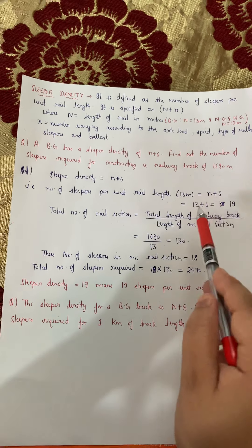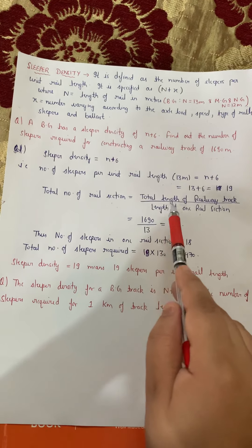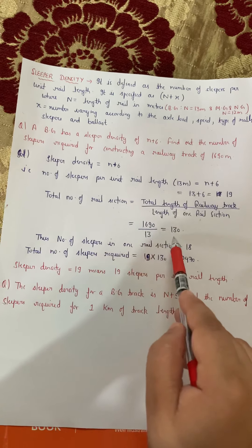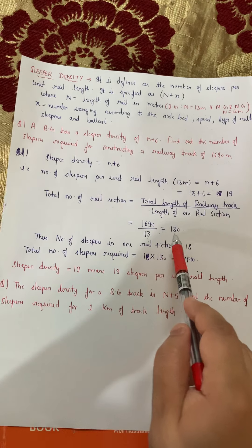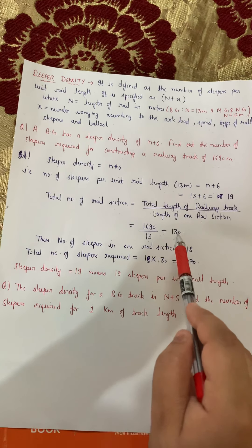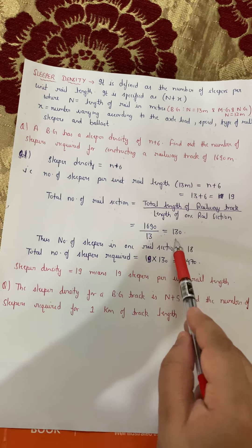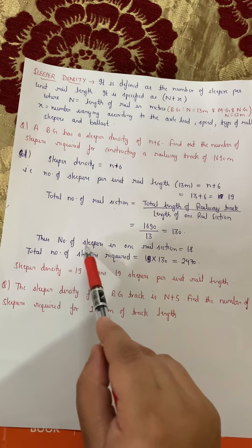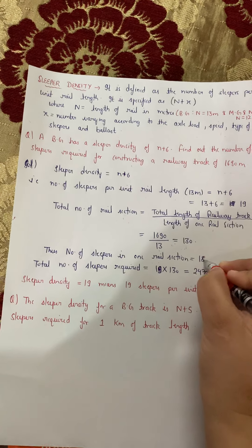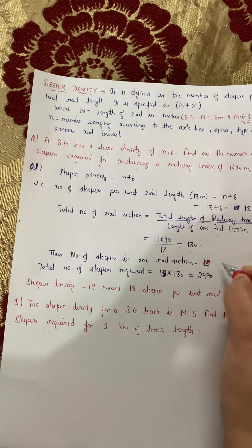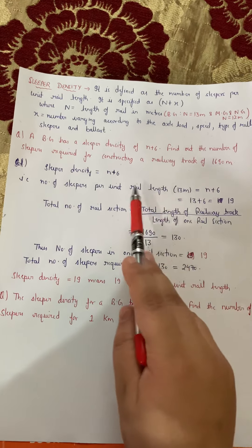So let's solve a question now. The question is: a broad gauge track has a sleeper density of n plus 6. Find out the number of sleepers required for constructing a railway track of 1690 meters. Ek broad gauge railway track construct ho raha hai jis mein sleeper density hai n plus 6, and total railway track ki length hai 1690 meters — total number of sleepers required kitnay honge?